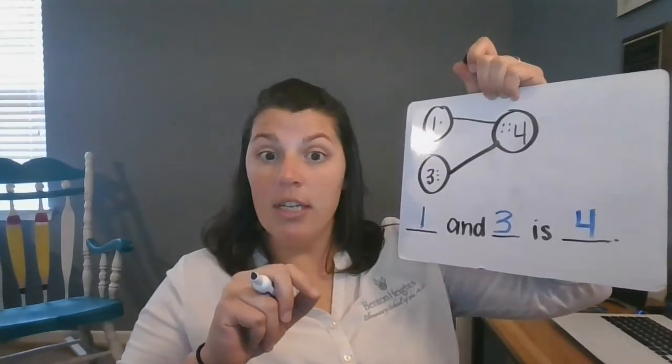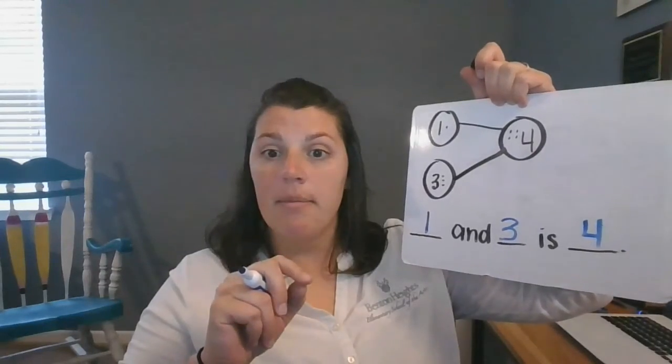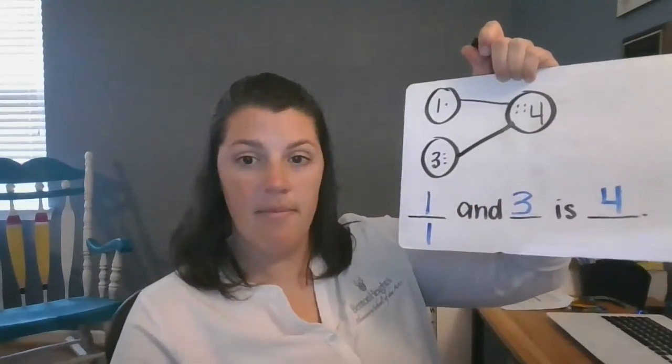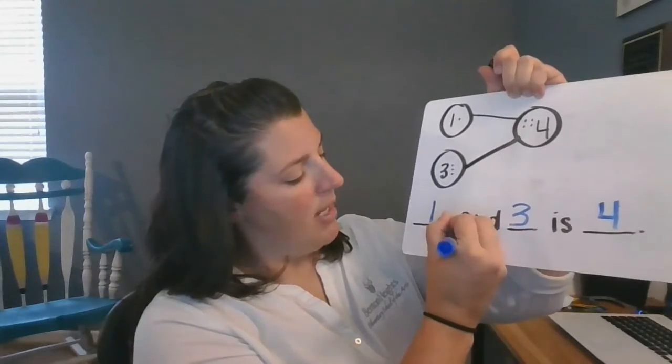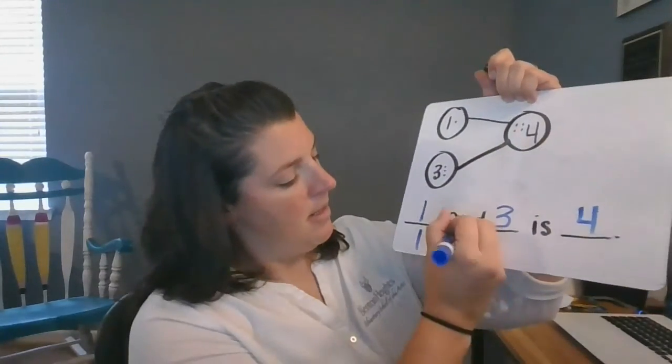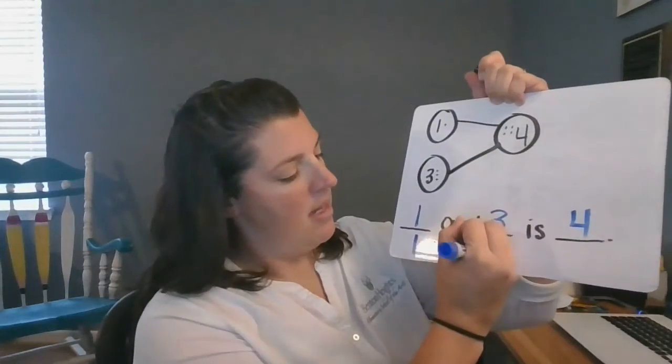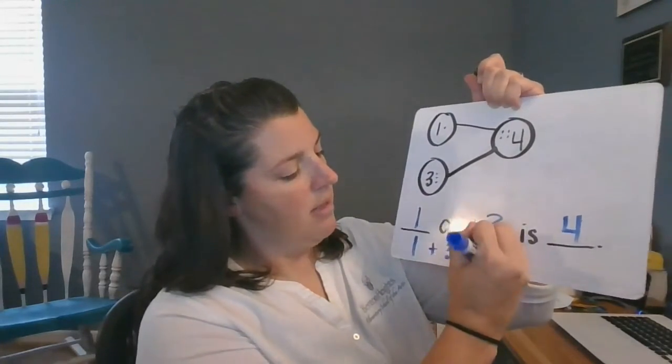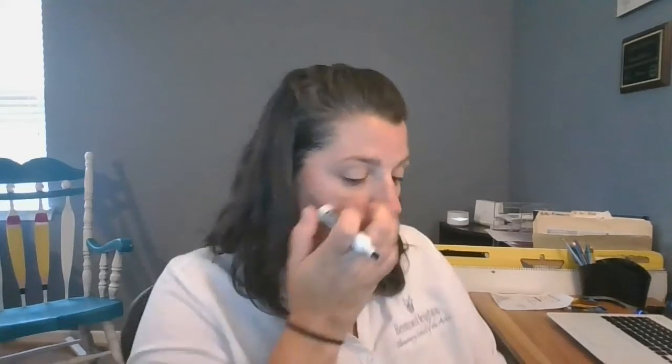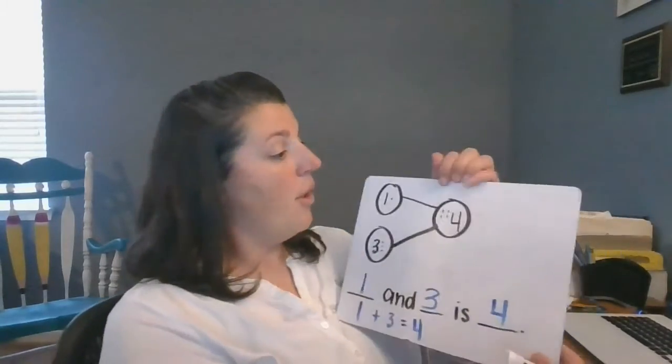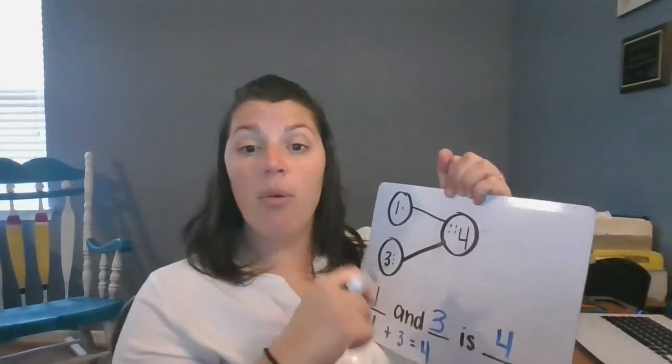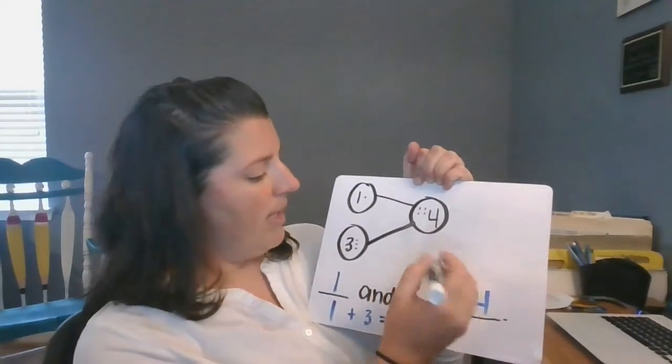If you wanted to make this an equation, what could it say? One plus three equals four. Watch this. I can do this really cool thing. I almost put the wrong cap on my marker. I can switch the order of my words around. Because when I'm putting things together, it goes back and forth. It goes both ways. A reciprocal relationship.